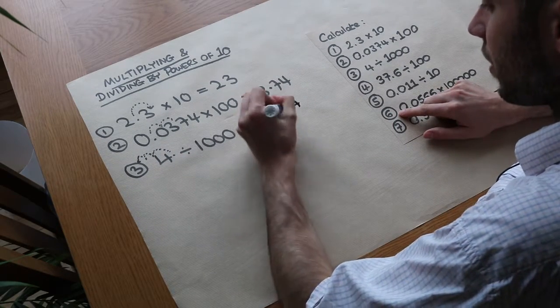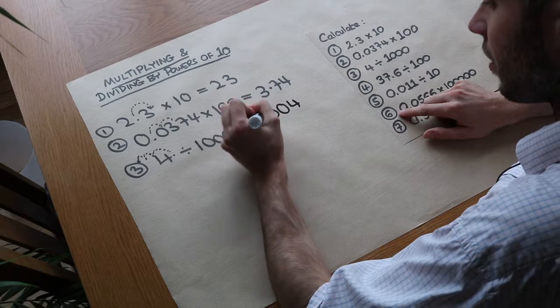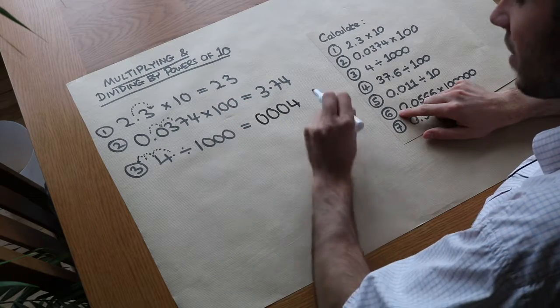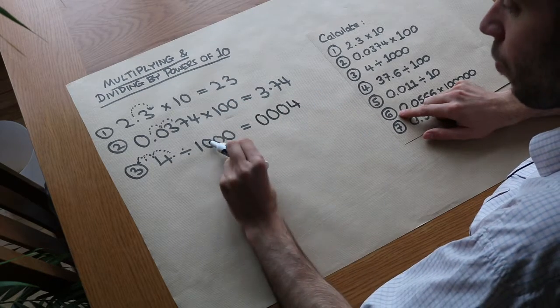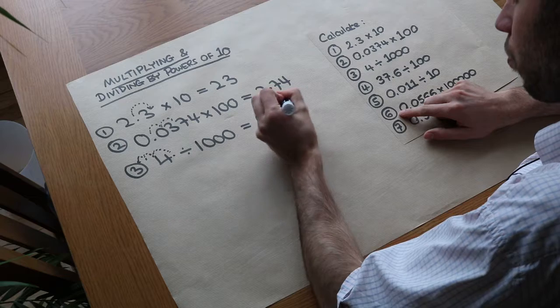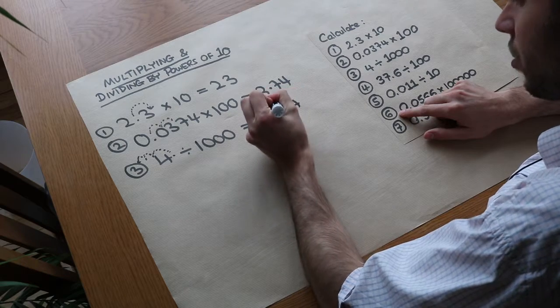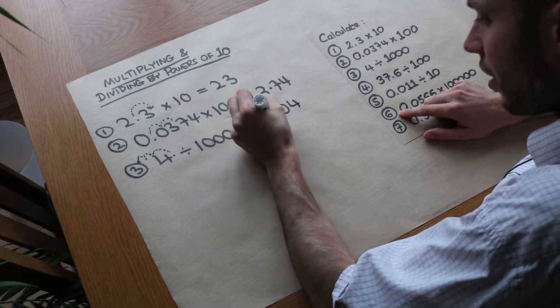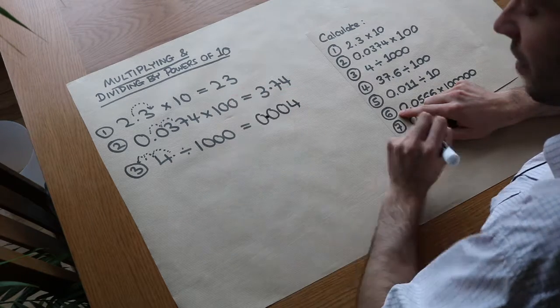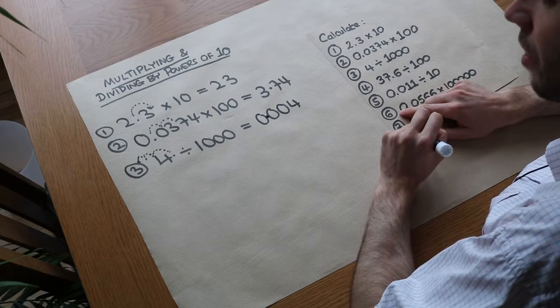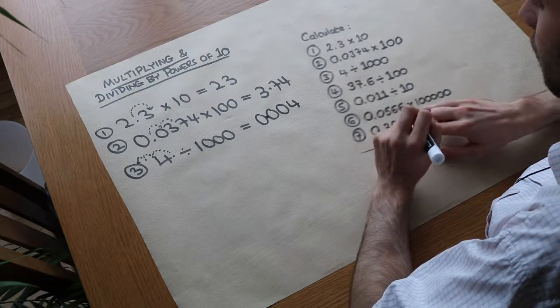So we have 4 with zeros placed before it: 0, 0, 0. Moving the decimal point 1, 2, 3 places to the left, you can see it ends up giving us 0.004.